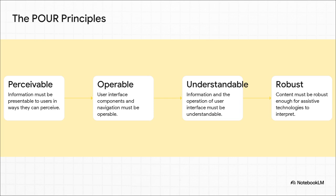And finally, R is for Robust. Does it work with the tech people are using today and the tech that's coming tomorrow? This is all about writing clean code that a screen reader, a browser extension, or some brand new device can interpret without breaking. Perceivable, operable, understandable, and robust — that's POUR.